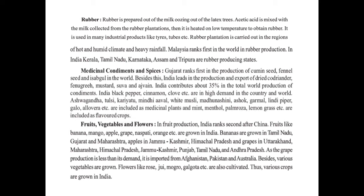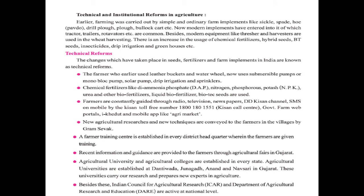Besides, various vegetables are grown and flowers like rose, jui, mogra, and galgota are also cultivated, thus various crops are grown in India. Now let's come to the next topic: in the agriculture sector, what changes are there? Technical and institutional reforms in agriculture.